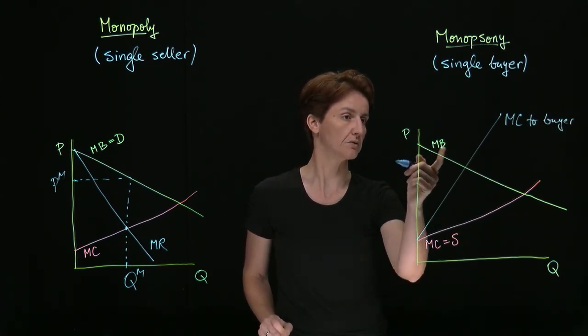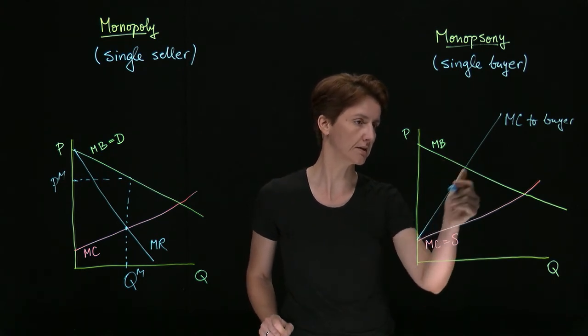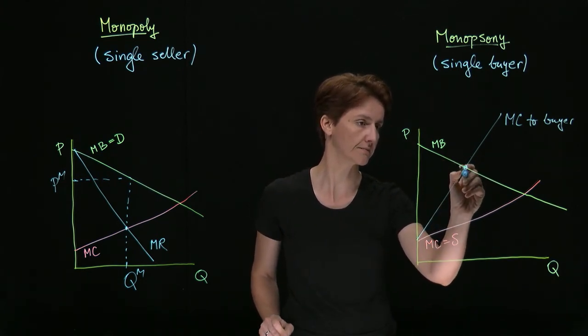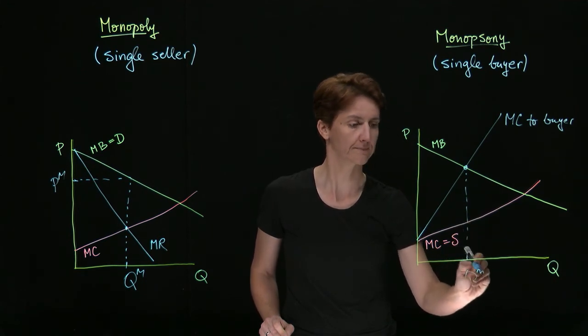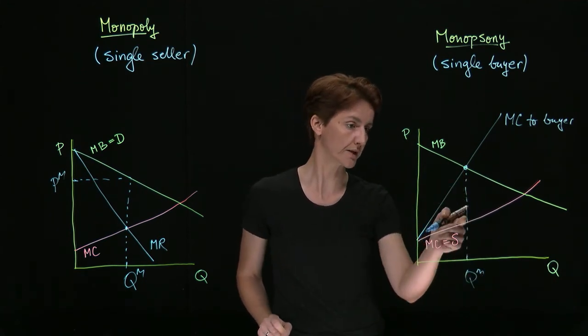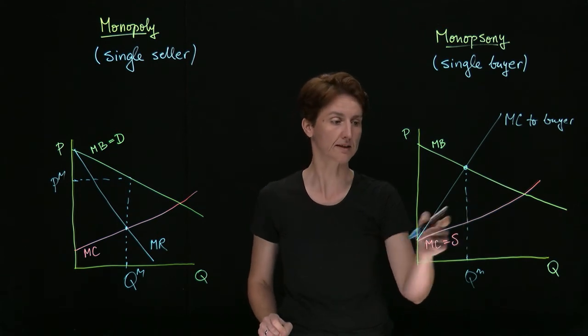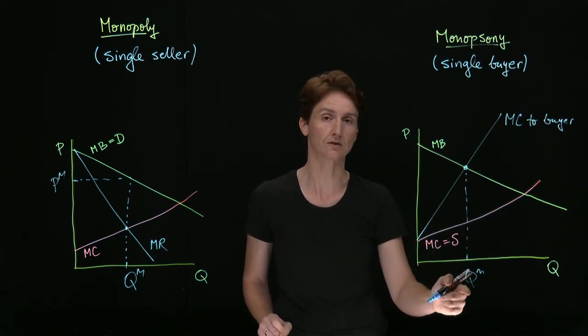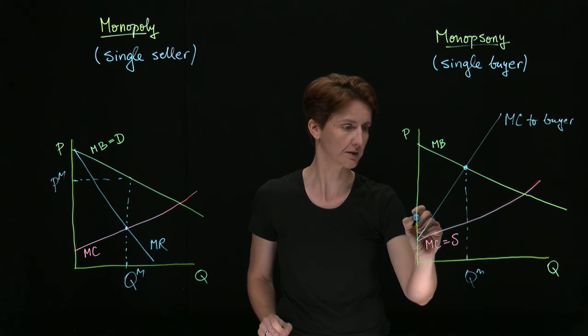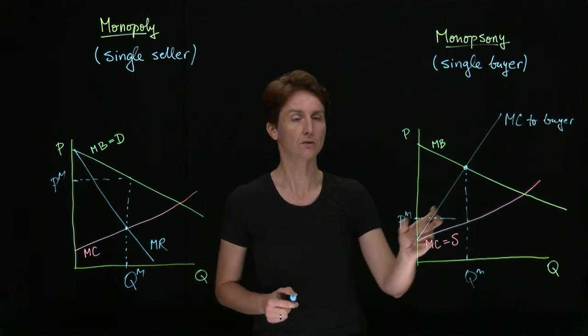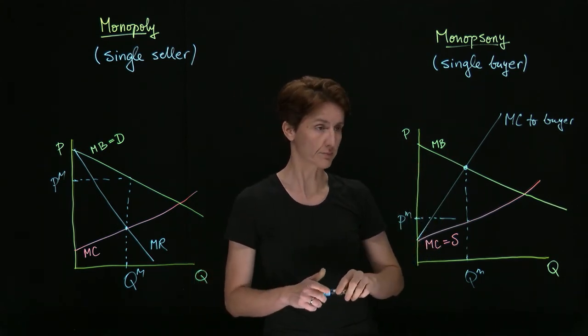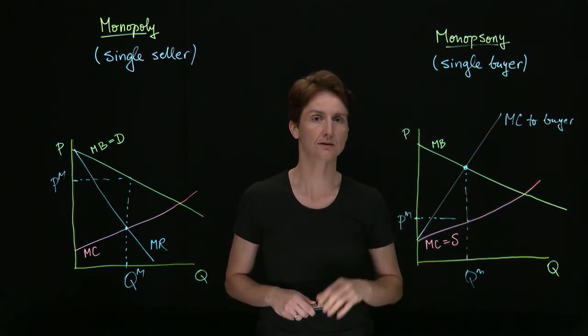And so the buyer will continue to purchase until they get to this intersection. What price will they offer? Well, whatever price they need to offer, so that the supply side will still be willing to put out this many units. So that will be here. So this is the way to find the price that a monopsonist sets.